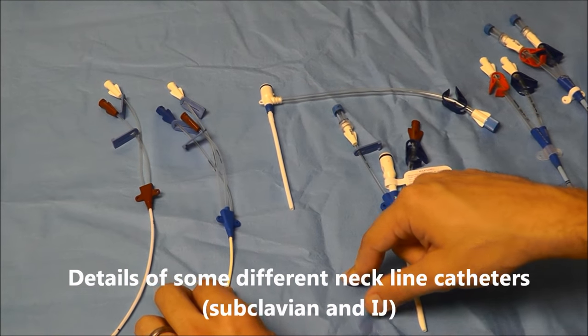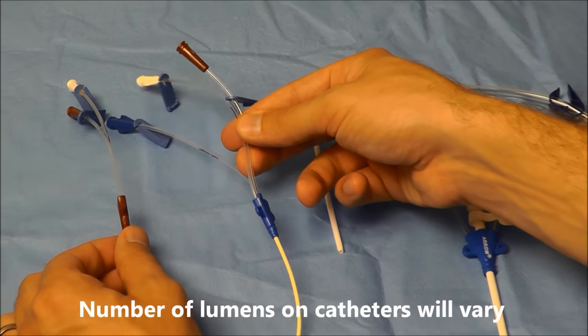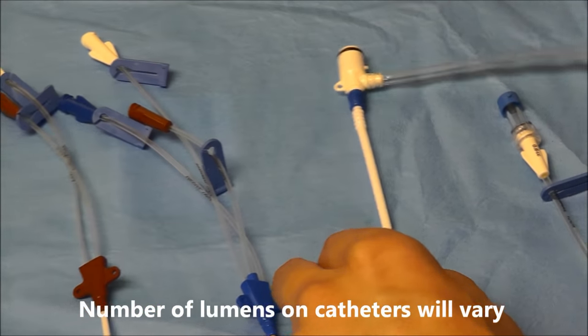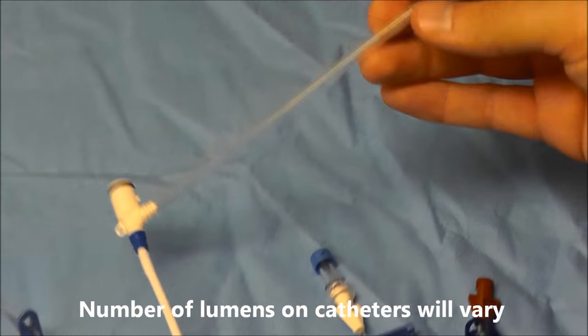Some central line catheters have multiple lumens that you can see here, while some of them just have one lumen.